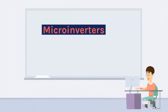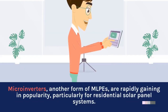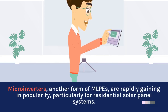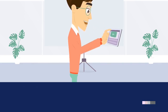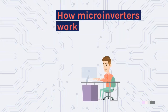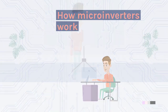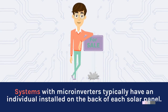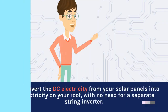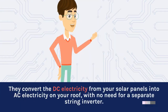Microinverters, another form of MLPEs, are rapidly gaining in popularity, particularly for residential solar panel systems. Systems with microinverters typically have an individual microinverter installed on the back of each solar panel. They convert the DC electricity from your solar panels into AC electricity on your roof, with no need for a separate string inverter.